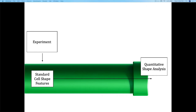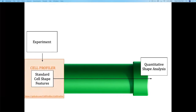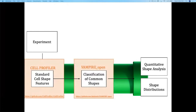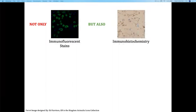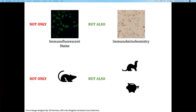So we built our first pipeline. We took images from an experiment, calculated standard cell shape features, and did some basic quantitative shape analysis. Our first iteration used Cell Profiler, an amazing software based in Python. Our second iteration added Vampire, a package from the Dennis Wirtz lab at Johns Hopkins, which allowed us to classify cells into representative phenotypes. We used this pipeline in a publication currently in press to understand cell response to oxygen glucose deprivation.